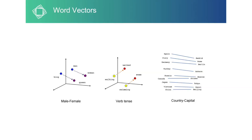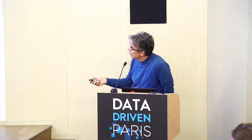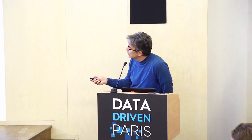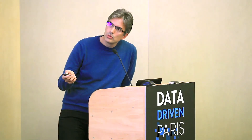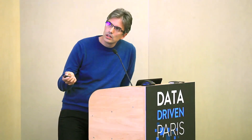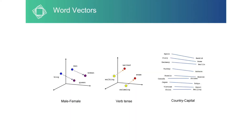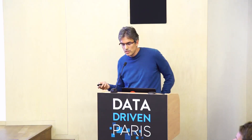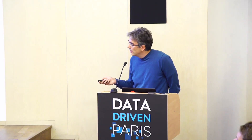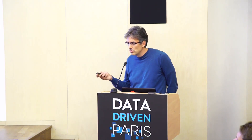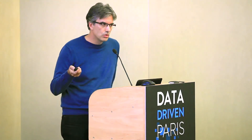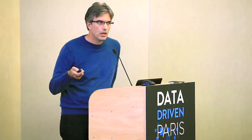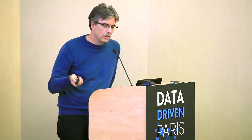The vector representations are quite efficient. For example, the translation between 'man' and 'woman' is quite the same as the transition between 'king' and 'queen.' Similarly, Spain-Madrid and Italy-Rome capture the capital-country relationship. Word2Vec has proven to be a good representation of most words, and we can now use these vectors as input for all our natural language processing stages.